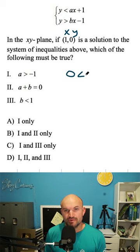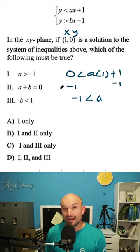When I do the first one, I get 0 is less than a times 1 plus 1. Now, when I go ahead and simplify this, put the 1 to the other side, what I'm going to have is negative 1 is going to be less than a, or a is greater than negative 1. So we know number 1 is true.